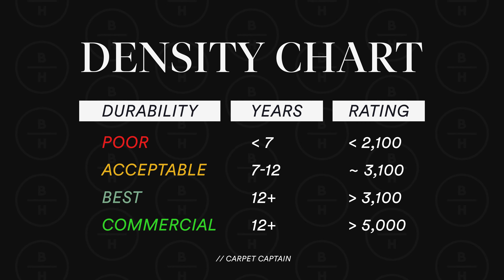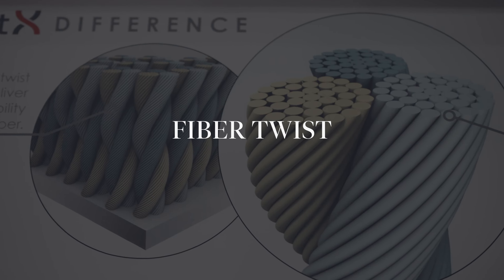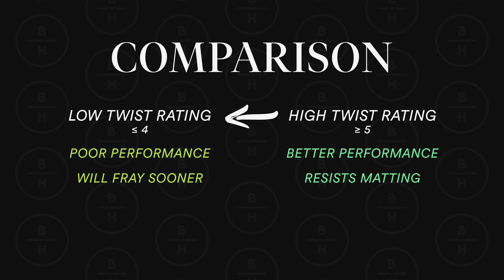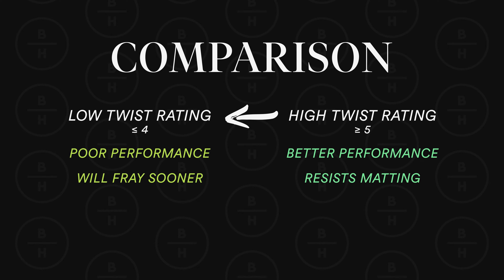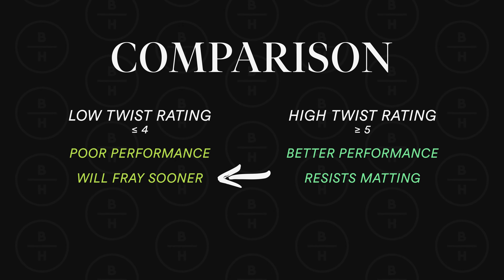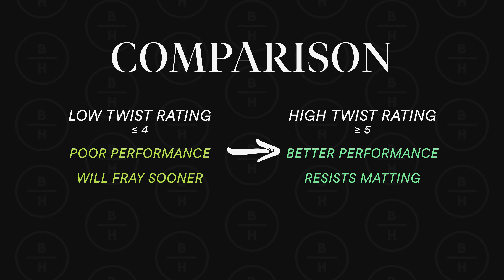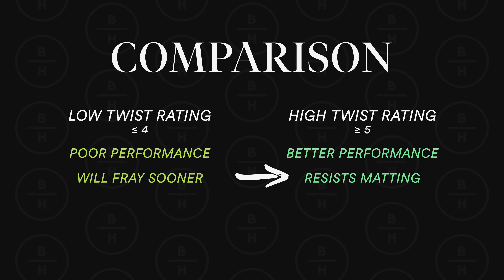Another factor that helps durability is called fiber twist. Carpets have a twist rating — it's not on the back of the carpet, but the manufacturer can tell you. A carpet with a low twist rate isn't going to last as long and will frizz out on top sooner. A carpet with a high twist rate, say five twists per inch, will have stronger durability, last longer, and resist matting down. It's not something salespeople talk about a lot, but it is important.